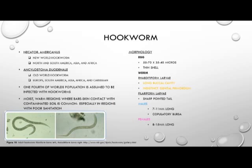Necator americanus is known as the New World hookworm and is found in North and South America, Asia, and Africa. Ancylostoma duodenale is known as the Old World hookworm and is found in Europe, South America, Asia, Africa, and the Caribbean.